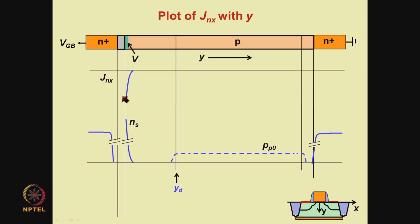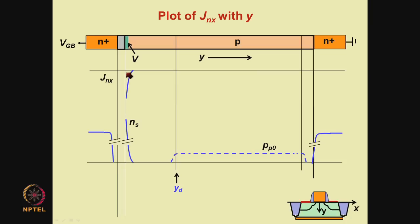As the electron concentration falls to zero, the current density also falls to zero. The current density is shown on the negative axis because the current flows from drain to source, whereas the x direction is from source to drain. We conclude that the current of electrons from source to drain is confined very close to the interface. The current density is maximum at the interface and then decays rapidly, restricted to the inversion layer.